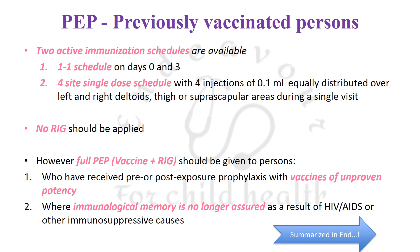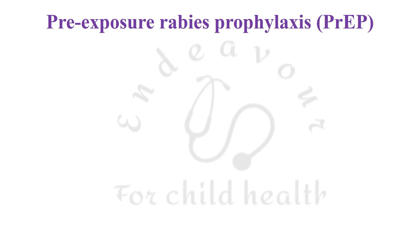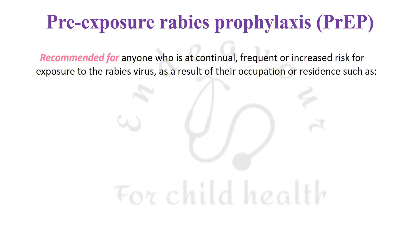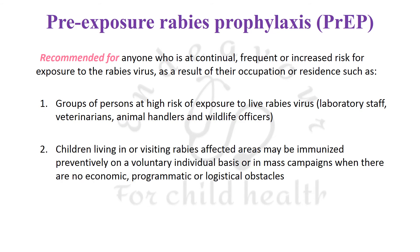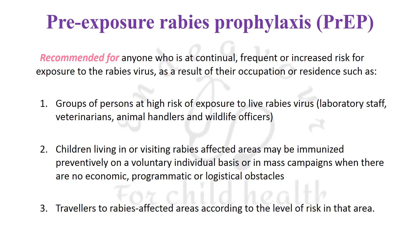Pre-exposure rabies prophylaxis, also referred to as PrEP, is recommended for anyone at continual, frequent, or increased risk of exposure to rabies virus as a result of their occupation or residence. High-risk groups include laboratory staff, veterinarians, animal handlers, and wildlife officers. Children living in or visiting rabies-affected areas may be immunized preventively on a voluntary basis or in mass campaigns when there are no economic, programmatic, or logistic obstacles. Travelers to rabies-affected areas should also be considered according to the level of risk in that area.